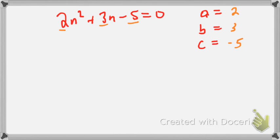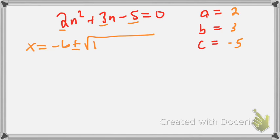Now you want to write down the quadratic formula: X equals negative B, plus or minus the square root of B squared minus 4AC, all over 2A.